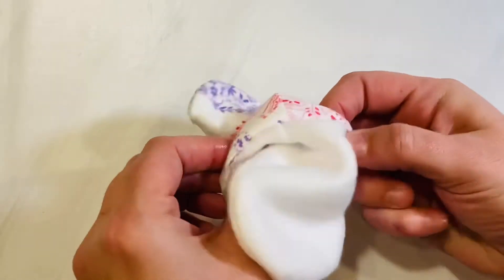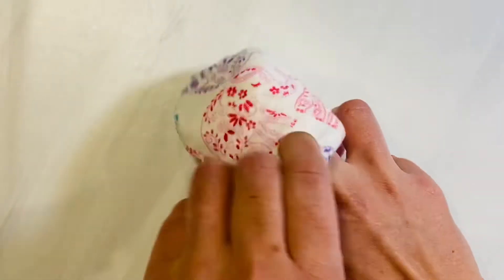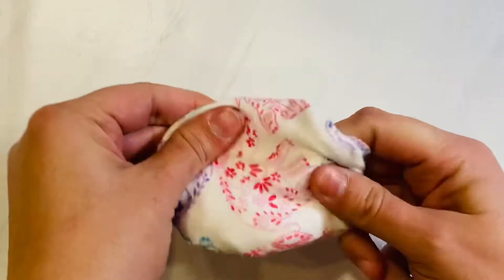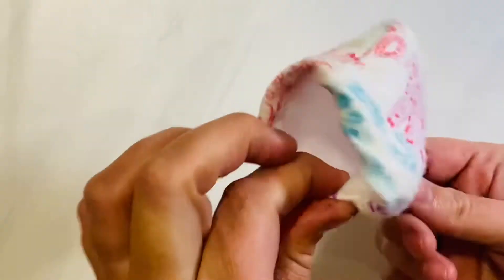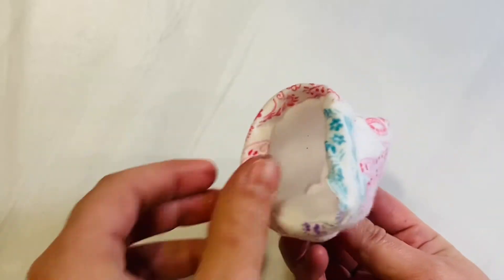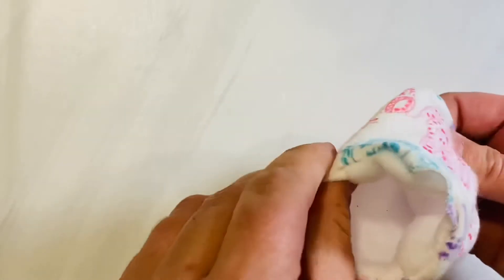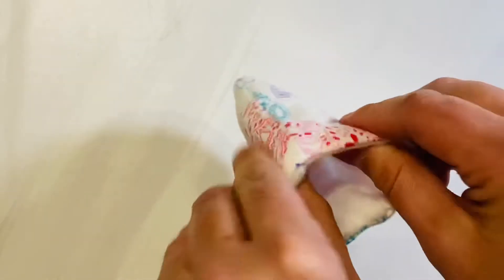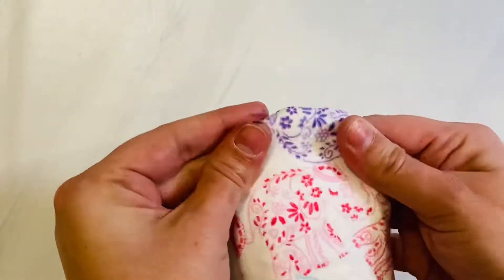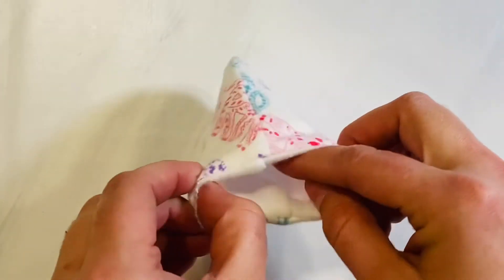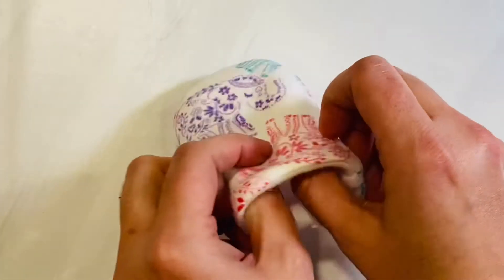Now pinch the sides of your mitten and tuck your lining piece inside of your outer mitten fabric. Once you have it tucked in, go ahead and make sure you pull your seams up at the opening of your mitten so that everything lays flush. Here's what it should look like at this point. You still have your opening and everything is nice and tucked.